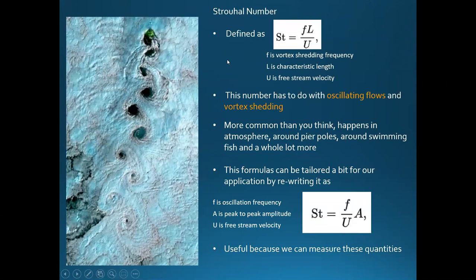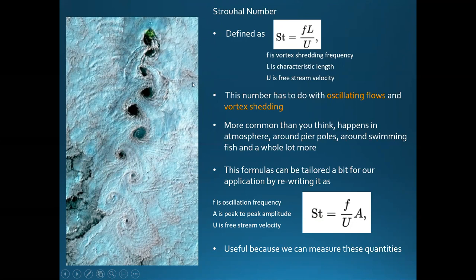The Strouhal number relates to vortex shedding and is defined as vortex shedding frequency times characteristic length over free stream velocity. We can modify this for fish by changing the frequency to the oscillation frequency of the tail, the characteristic length to peak-to-peak amplitude of the tail, and U stays as the free stream velocity. This effect is common — it happens in the atmosphere around islands, around pier poles, in power plants, and around towers.